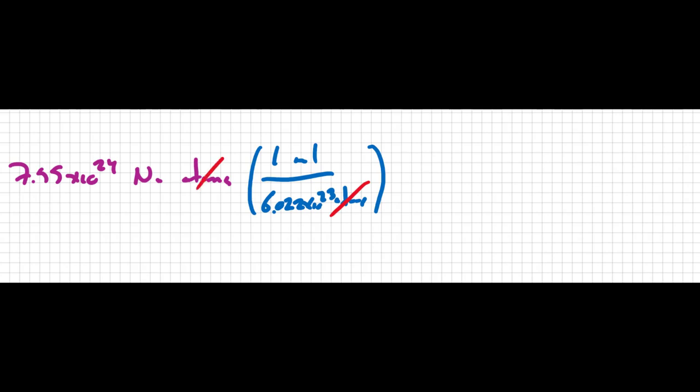And now I'm in moles. To get the mass, I need the periodic table. So for sodium, 1 mole of sodium is equivalent to 22.990 grams. So I can say there are 22.990 grams for every 1 mole of sodium. That'll cancel out the moles.